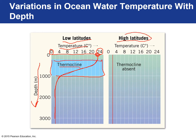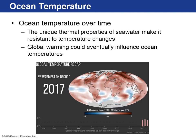At high latitudes we have a different story. On the sea surface at high latitudes, the temperature is about 3°C and that temperature doesn't change as you go to deeper waters — one kilometer, two kilometers, three kilometers. So there is no thermocline; the thermocline is absent. We refer to this temperature profile as isothermal.